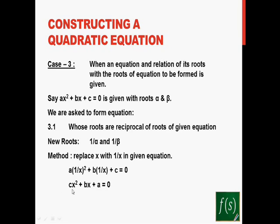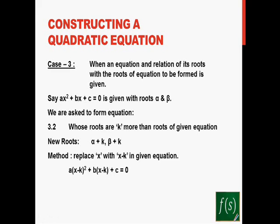The new equation you get is cx squared plus bx plus a equals zero. The roots of this new equation are the reciprocals of the roots of the original equation ax squared plus bx plus c equals zero. Very simple!